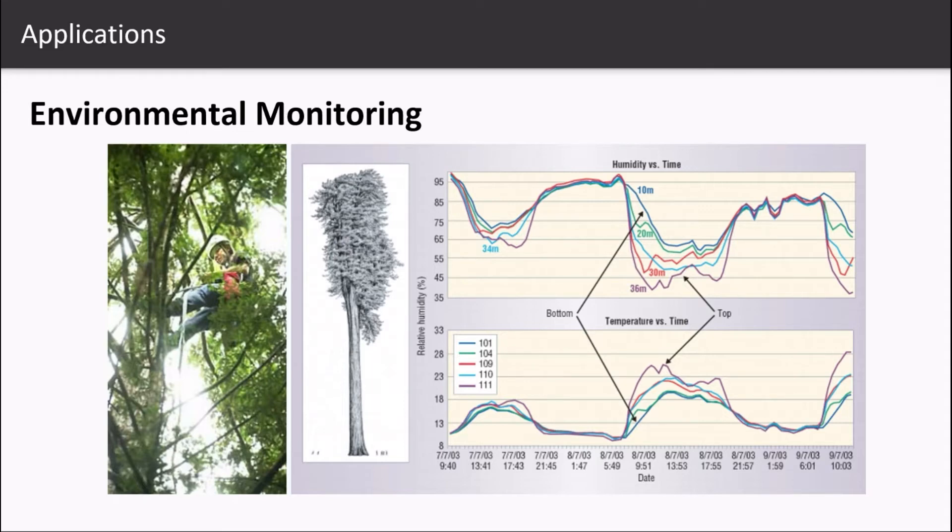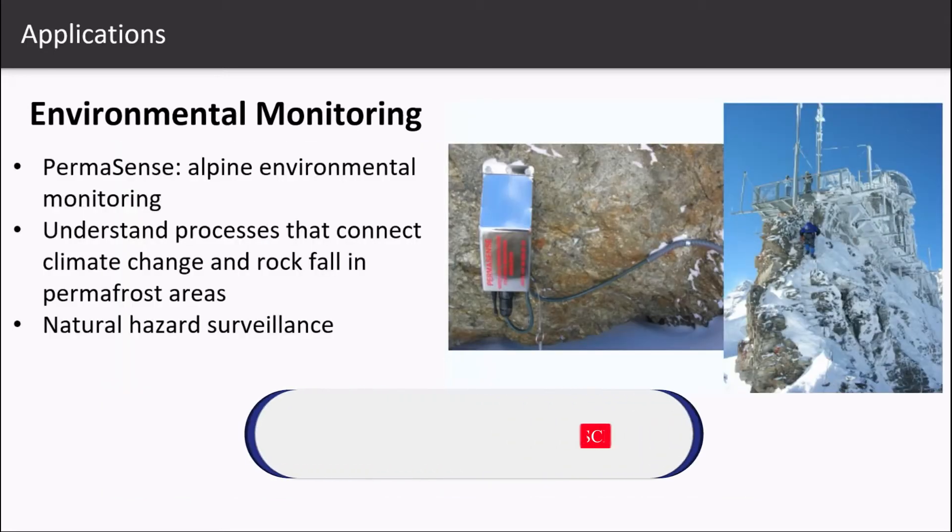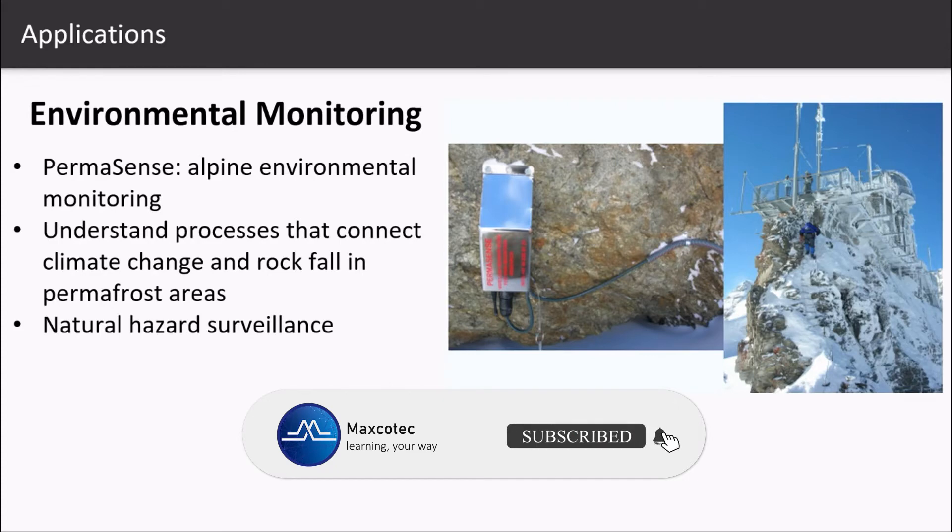Monitoring the microclimate throughout the volume of redwood trees helps form a sample of the entire forest. In the same way, wireless sensor networks have allowed us to monitor conditions in harsh environments like windy and permafrost areas. Scientists understand the process that connects climate change and rock falls in such areas.